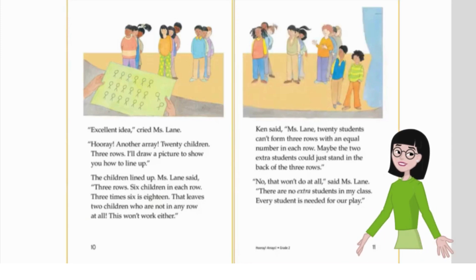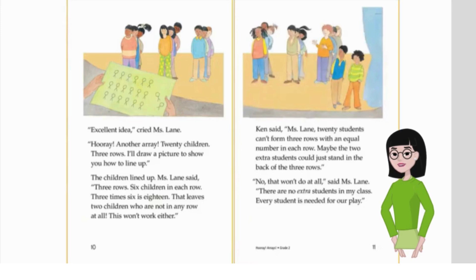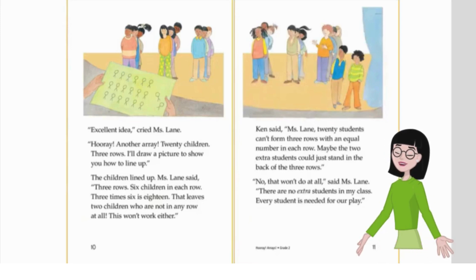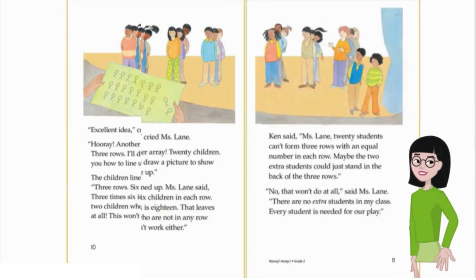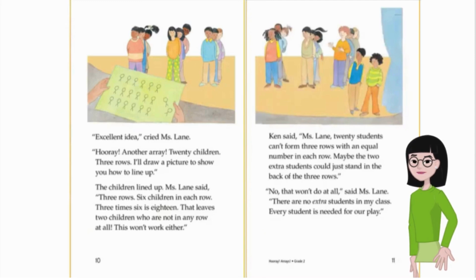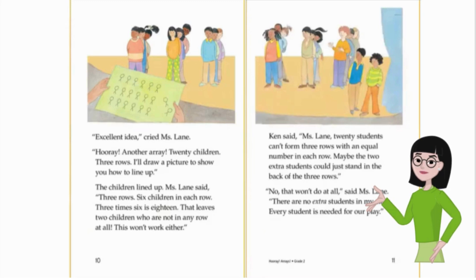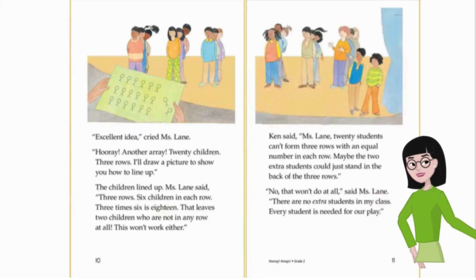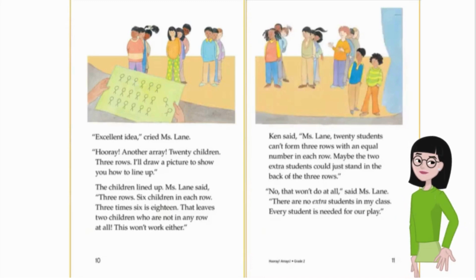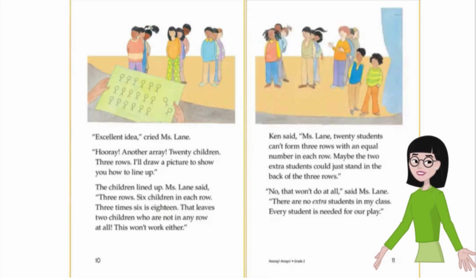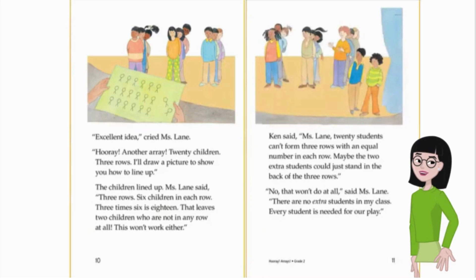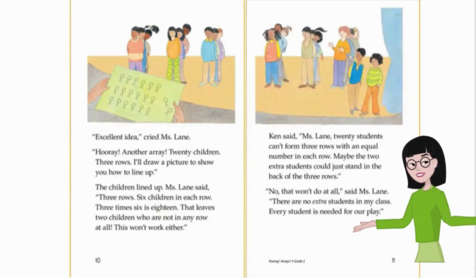Ken said, 'Ms. Lane, 20 students can't form three rows with an equal number in each row. Maybe the two extra students could just stand in the back of the three rows.' 'No, that won't work at all,' said Ms. Lane. 'There are no extra students in my class. Every student is needed for our play.' 'How about trying something else?' asked Tanya. 'Ms. Lane, could you stand in the middle of the first row, like this?' She showed Ms. Lane where to stand. 'The extra kids will join rows two and three,' said Tanya. 'Please don't call them extra,' said Ms. Lane. 'There will be no one extra in our array.' But now there were three rows with the same number of people in each row. 'Thank you for asking me to share the stage with you,' said Ms. Lane. 'But I can't steal my 20 students' moments in the spotlight. We'll have to think about this some more tomorrow.'